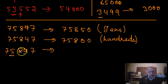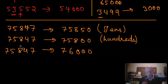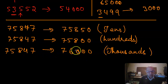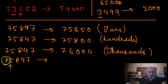Approximating 75,847 to the nearest thousands: the thousands digit is 5, and the next digit is 8, which is greater than 5, so round up. The 5 becomes 6 and all remaining digits become zeros. So 75,847 becomes 76,000. For the nearest ten-thousands, the ten-thousands digit is 7 and the next digit is 5, greater than or equal to 5, so round up. The 7 becomes 8 and four zeros follow, giving 80,000.